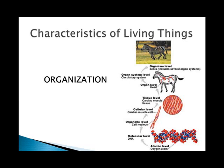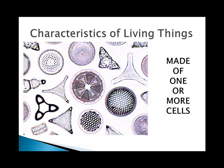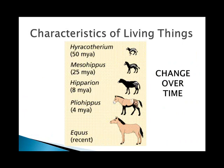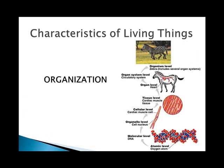Beyond that, you go to populations, which are all one species. Communities, which are many species types living in the same area. Ecosystems, which are the living things and the non-living parts of their environment. A biome, which is groups of ecosystems according to elevation, temperature, precipitation, and such. And then the biosphere, which contains all of the life on this planet. So there's quite a bit of hierarchy.